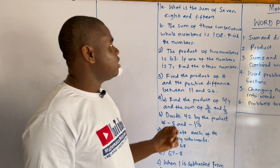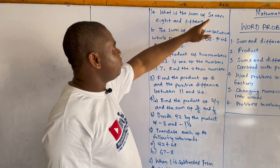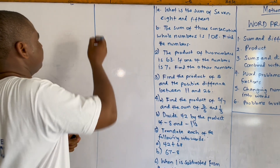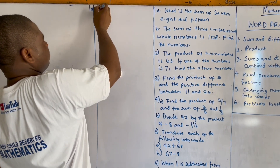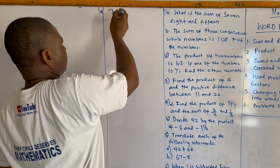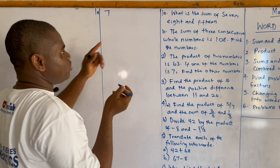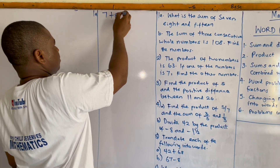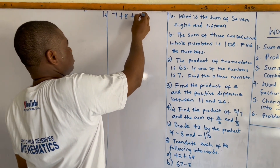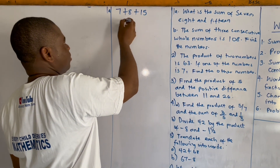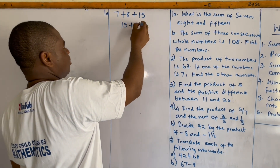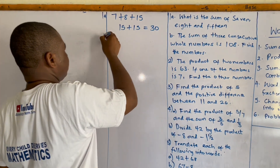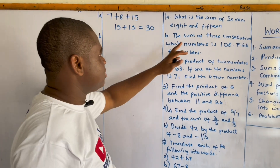For example one, we have: what is the sum of seven, eight, and fifteen? The sum of seven, eight, and fifteen means we are going to add them: seven plus eight plus fifteen. Seven plus eight is fifteen, plus fifteen equals thirty.